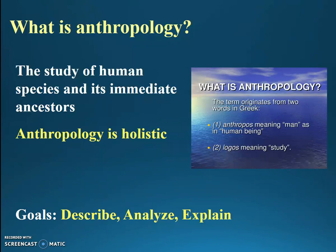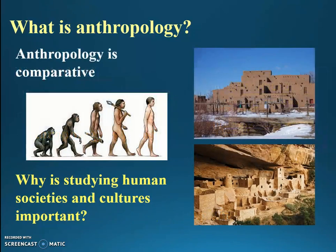We want to understand the different ways of life used by human societies to adapt to their environment. Anthropology is uniquely comparative in that it attempts to understand both similarities and differences among human societies today and in the past. For example, we can study people living in the Pueblos of the Southwest today — in the upper right-hand corner of your screen is Taos Pueblo in New Mexico, a modern Pueblo that's inhabited today — and see that their lives are similar to the people who inhabited Pueblos in the past, like the archaeological Pueblo of Mesa Verde shown on the lower right. We also study our species from its beginning several million years ago right up to the present.